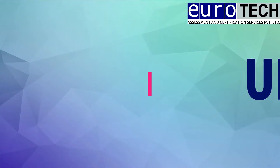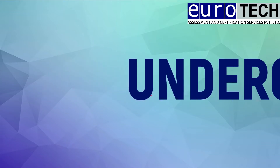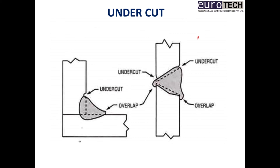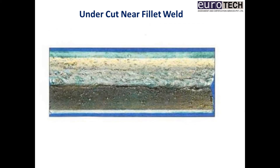Let us begin with undercut. The undercut in the fillet weld is shown in the figure. The undercut is marked in circles with arrows at different locations in both figures. The undercut in the fillet weld is also shown in the metal sample.